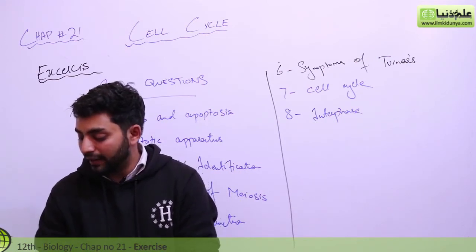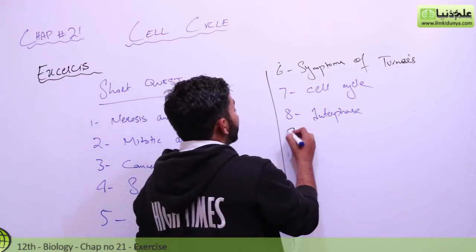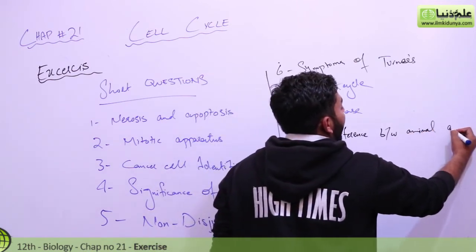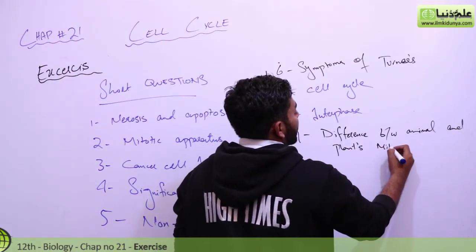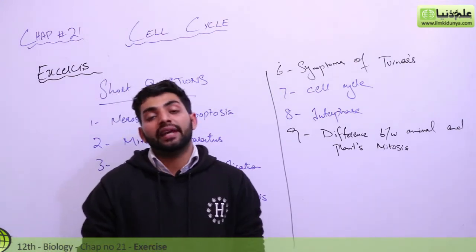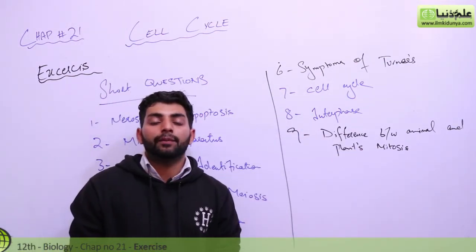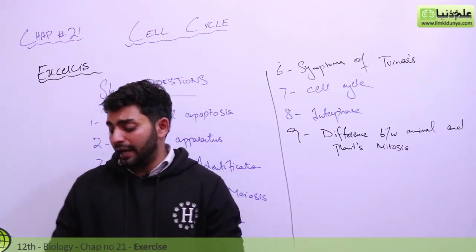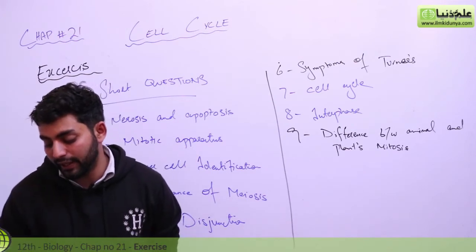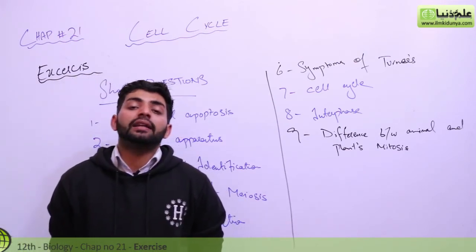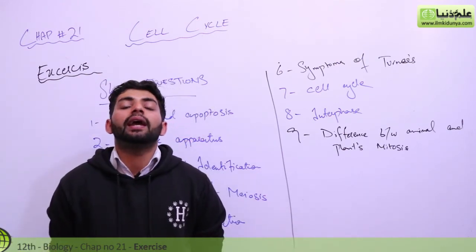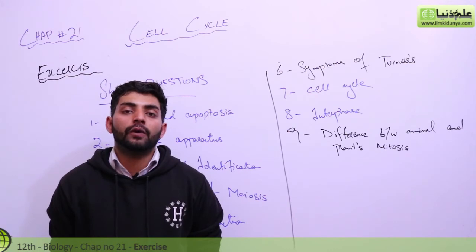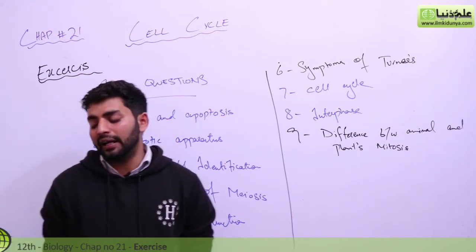Ninth question: in what respect does mitosis in plants differ from animals? There is a cell wall in plants but not in animals. The phragmoplast helps form the cell wall. Cytokinesis also differs — in animals a cleavage furrow forms, while in plants a cell plate is formed instead.